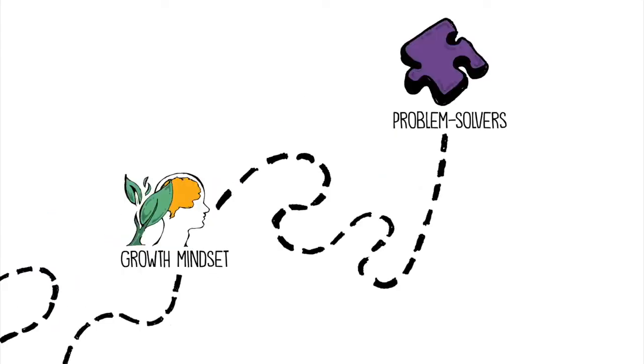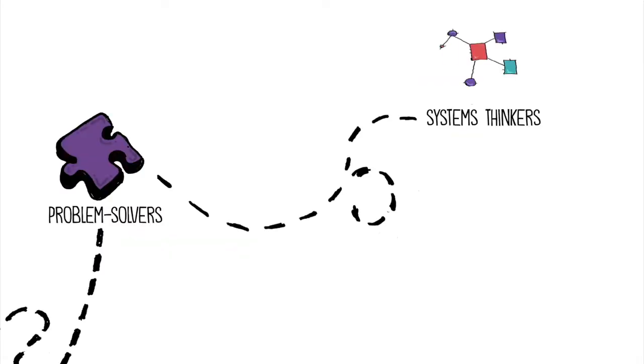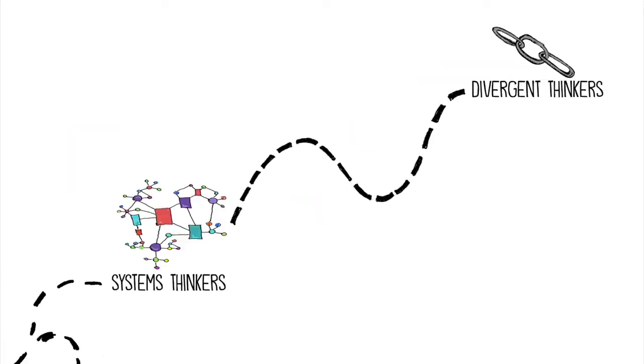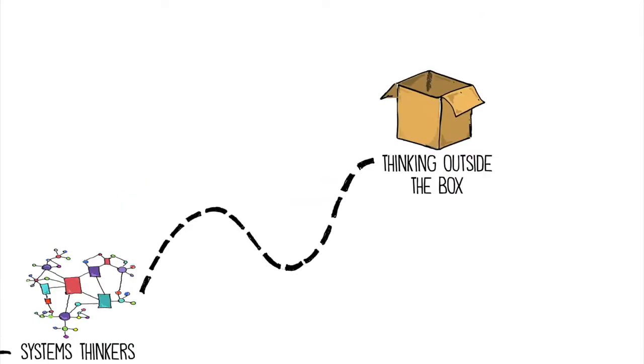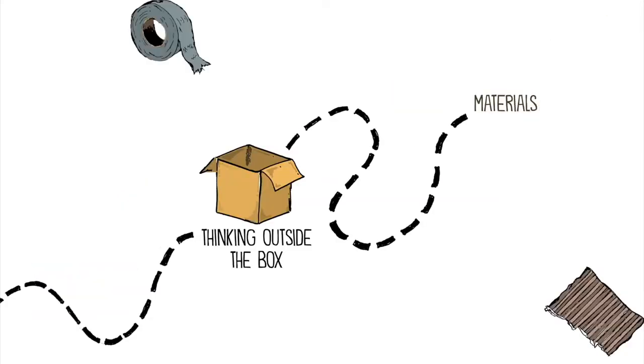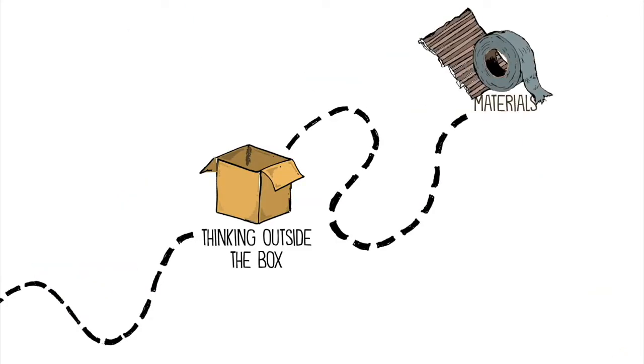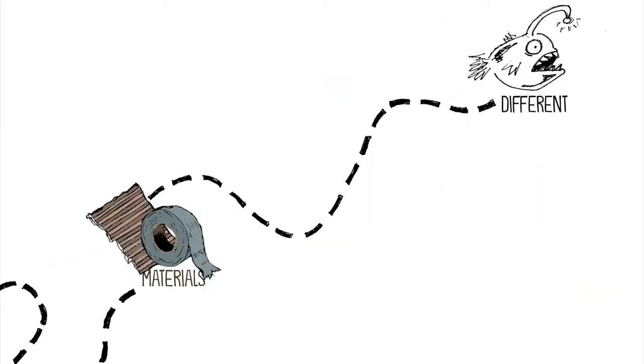They become problem solvers and systems thinkers. They become divergent thinkers thinking outside the box. They use creative constraint to find original uses for materials. Here they discover it's okay to be different.